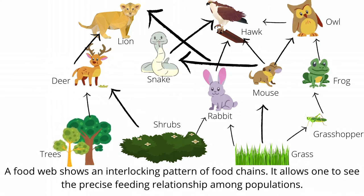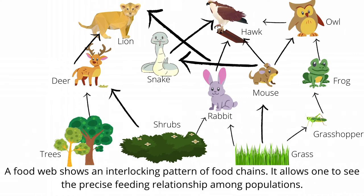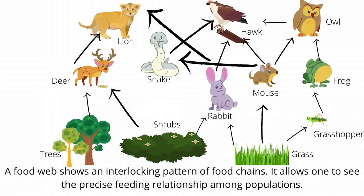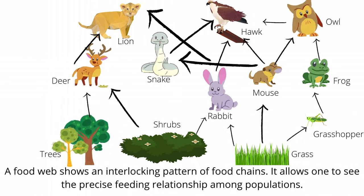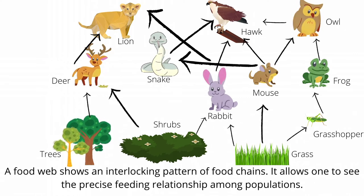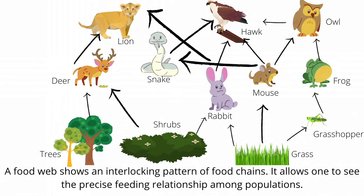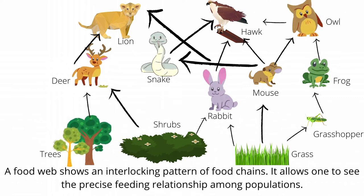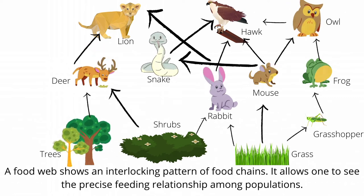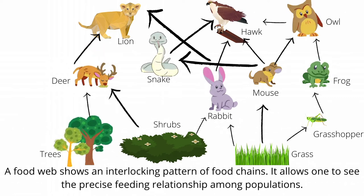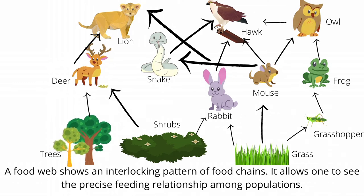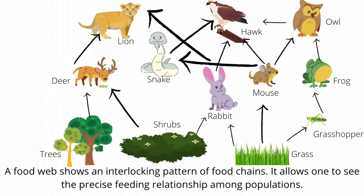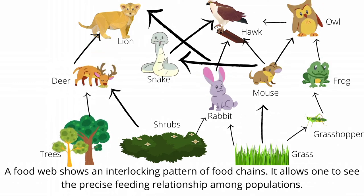If we list every species present in an ecosystem and draw arrows connecting them to each of their food sources, we would see many interlocking arrows that give the appearance of a spider web. We call the entire complex array of feeding relationships in an ecosystem a food web.